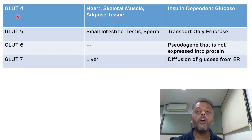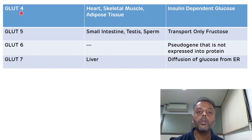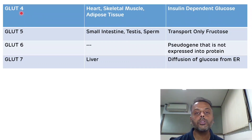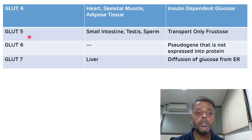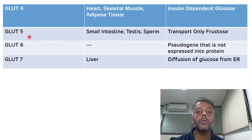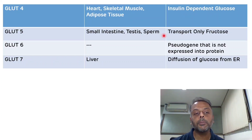In summary, the insulin-dependent glucose transporters are three: GLUT4, GLUT8, and GLUT12. Then there is glucose transporter 5 (GLUT5), which is exclusively for the transport of fructose. It is present in the small intestine, testes, and sperm.